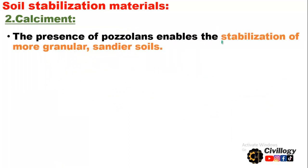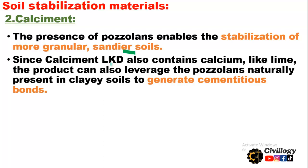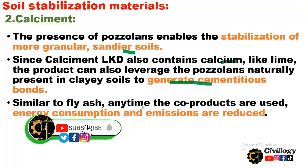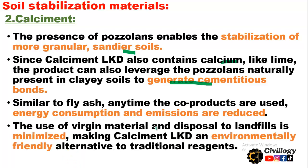The presence of pozzolans enables the stabilization of more granular and sandier soils. Whereas lime is for clay soils, calciment is used for granular or sandier soils. Since calciment/LKD also contains calcium like lime, it can also leverage pozzolans naturally present in clay soils to generate cementitious bonds similar to fly ash. The use of co-products reduces energy consumption and emissions, making calciment an environmentally friendly alternative to traditional reagents.